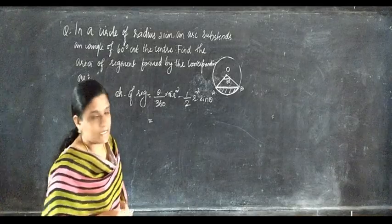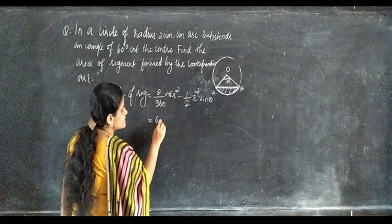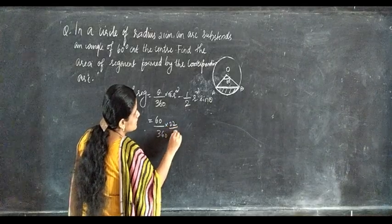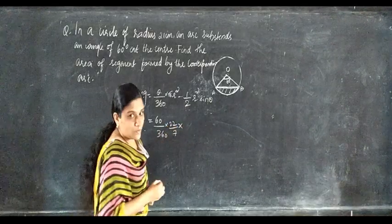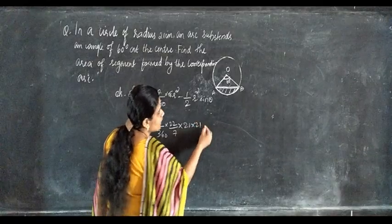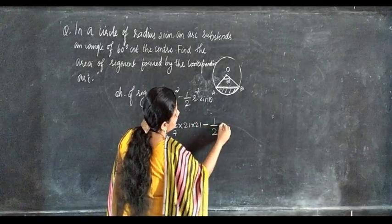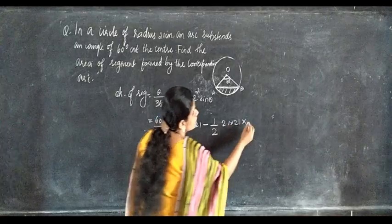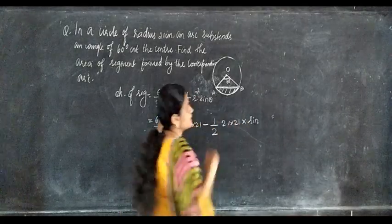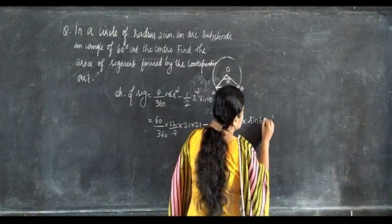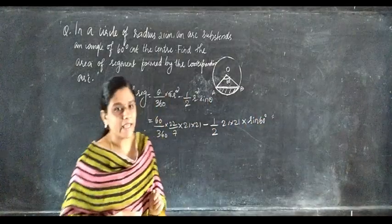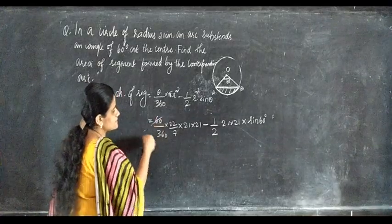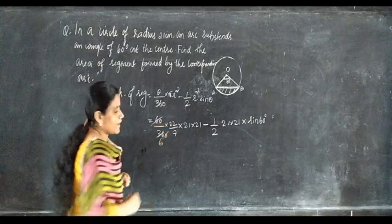Now, theta from the question is 60 degrees. So: 60 by 360 into 22 by 7 into 21 into 21, minus half into 21 into 21 into sine 60 degrees. We can cancel: 1 by 6, and 21 and 21 are common.